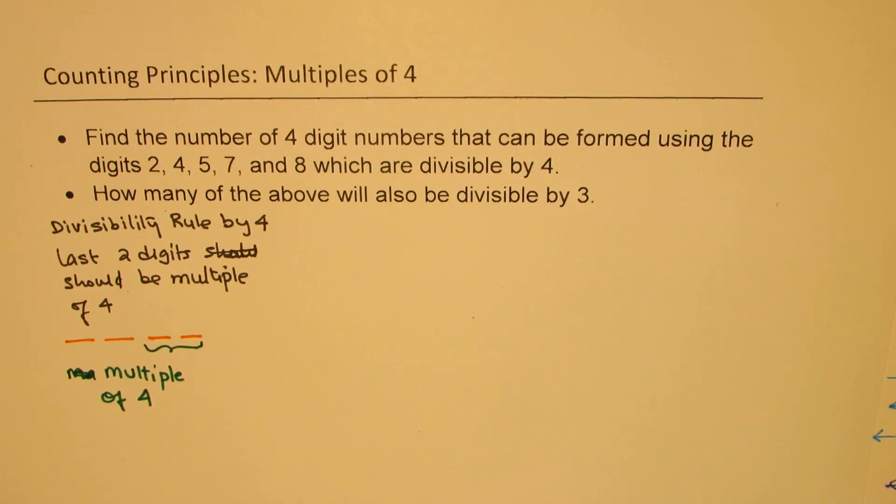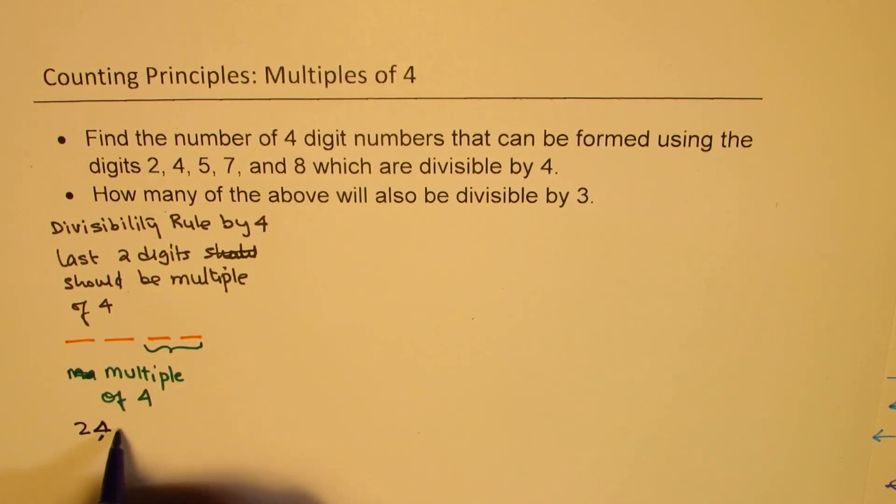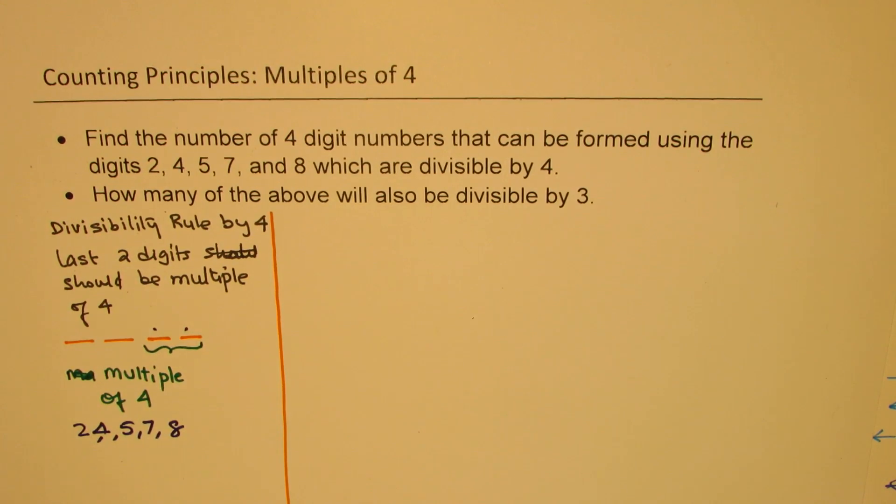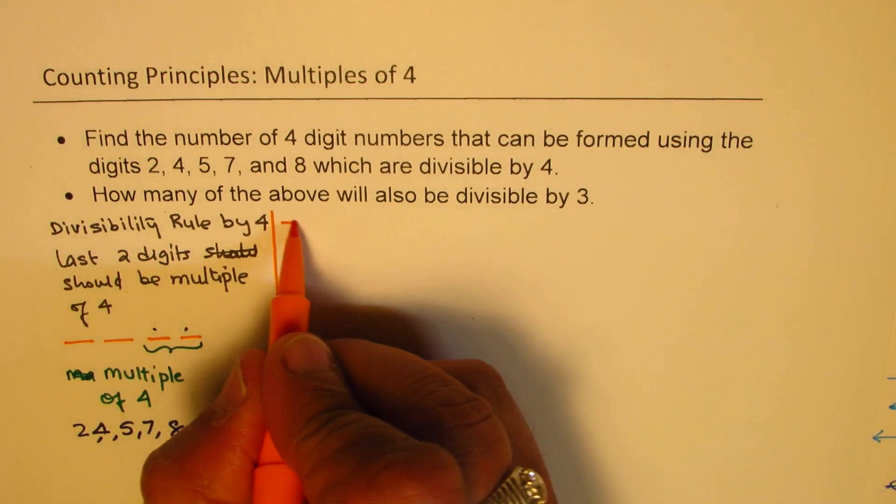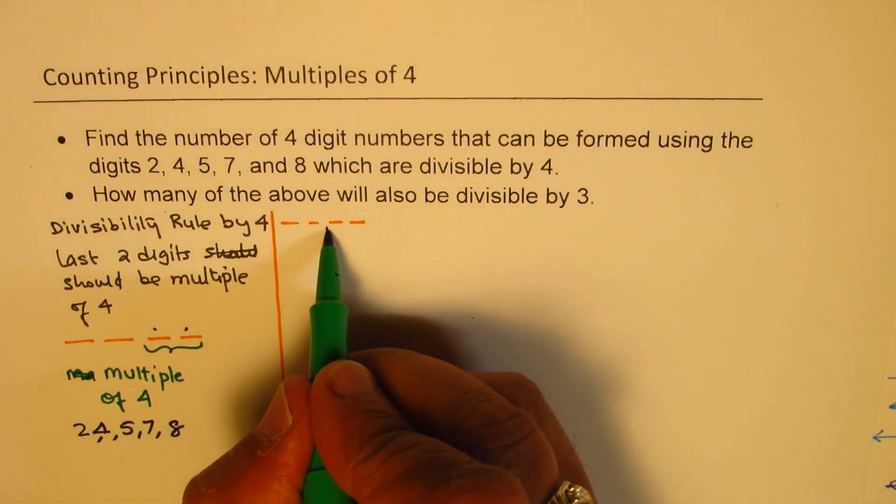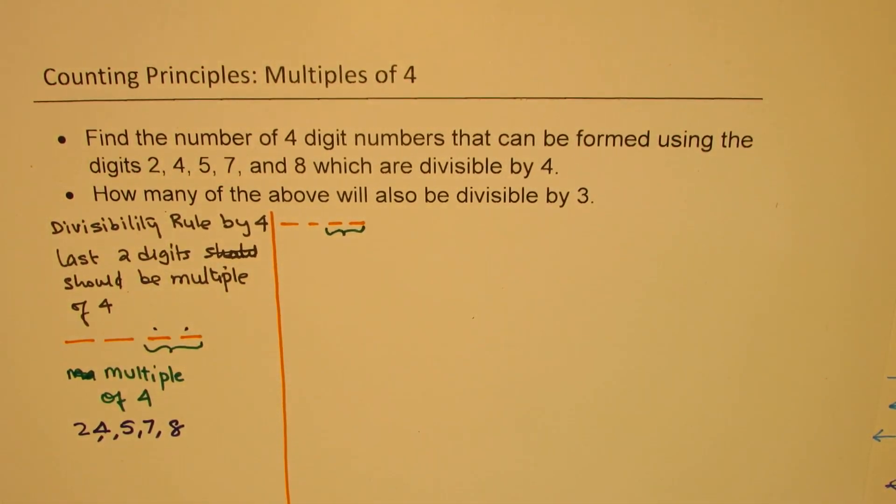So out of the numbers given, which are for us 2, 4, 5, 7, and 8, these are the five numbers. We have to look for combinations which are multiples of 4, and they can be placed in these two positions. So that is the first step. So let's write down those combinations. So we are definitely looking into four places. And at present, we are looking for these combinations. So multiples of 4 will be what?